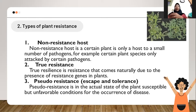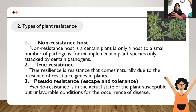Non-resistant hosts are susceptible plants that can only host a small number of pathogens. For example, certain plant species are only attacked by specific pathogens. Second, true resistance is resistance that comes naturally due to the presence of resistance genes in plants. Third, shadow resistance is when the plant is actually susceptible but conditions are unfavorable for the occurrence of disease.